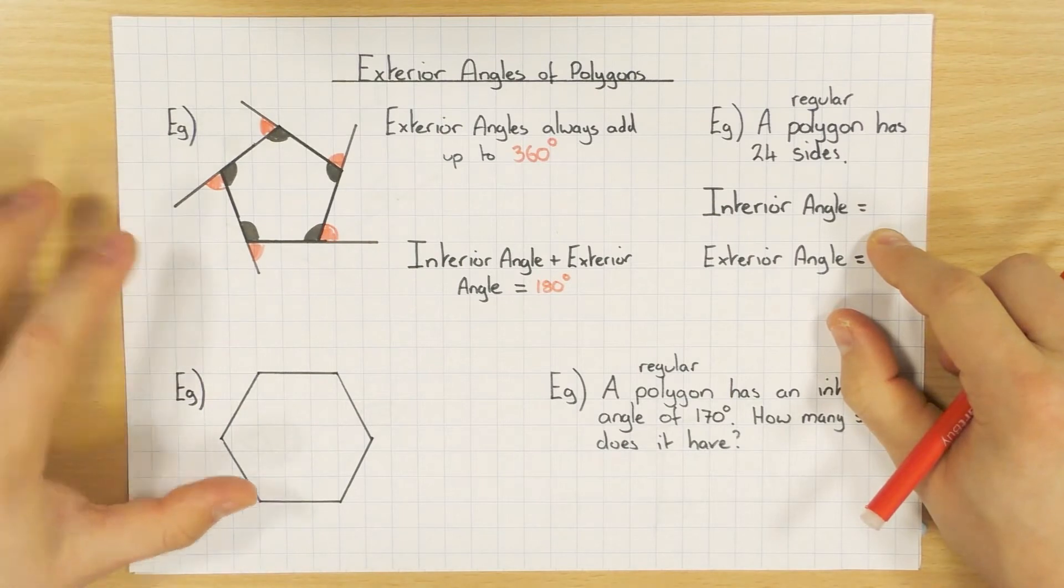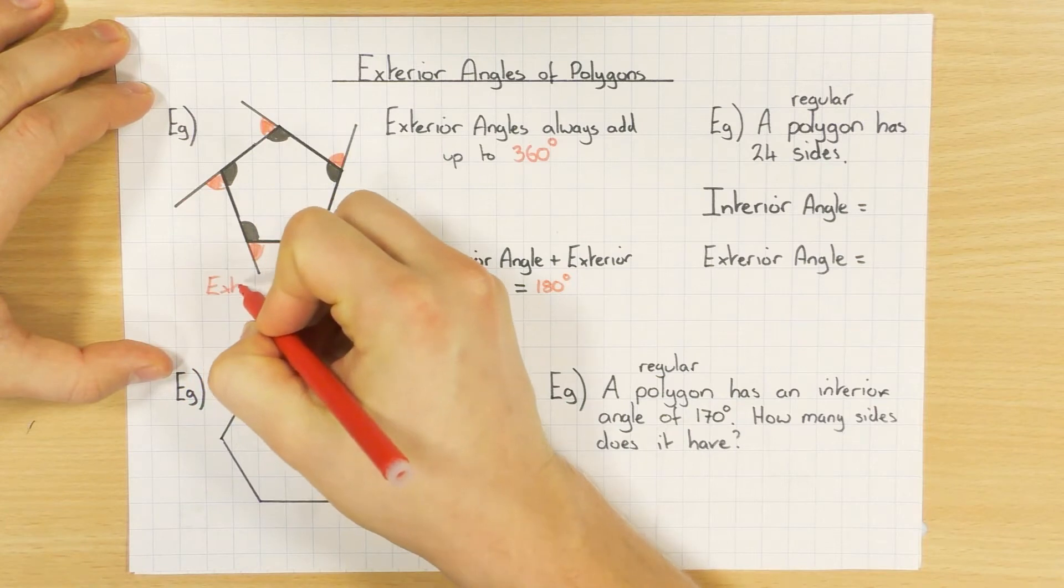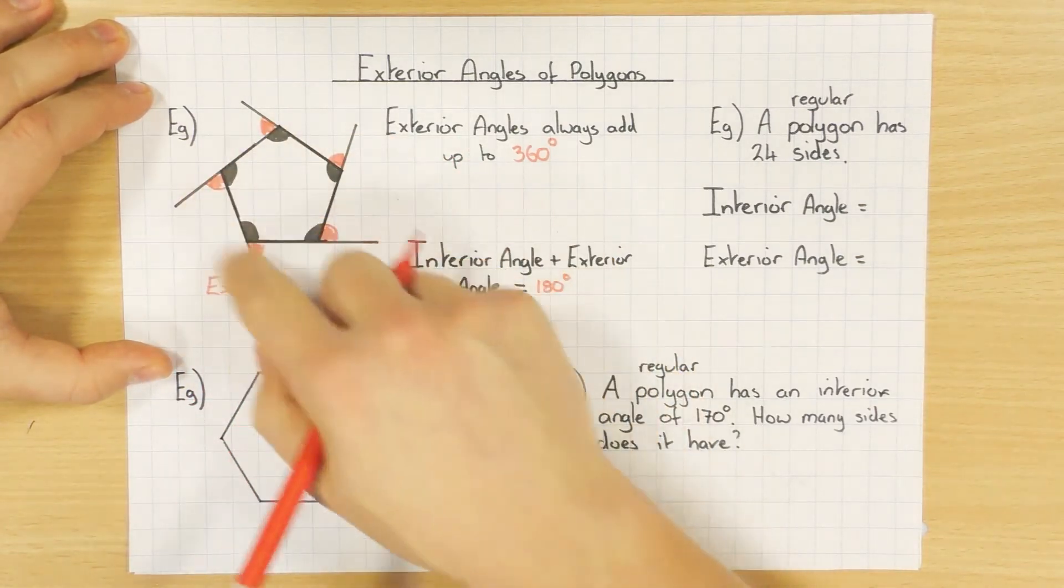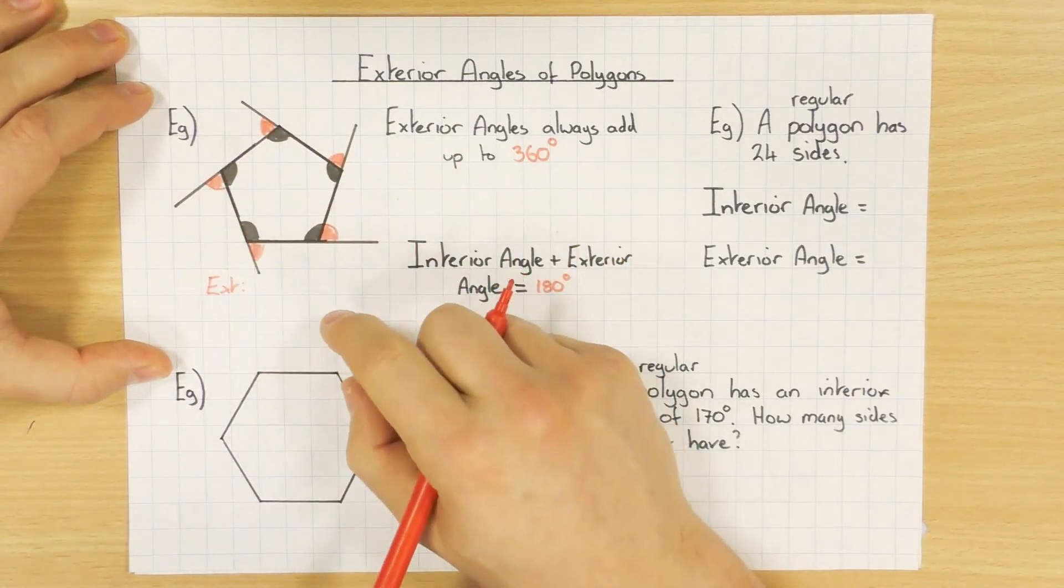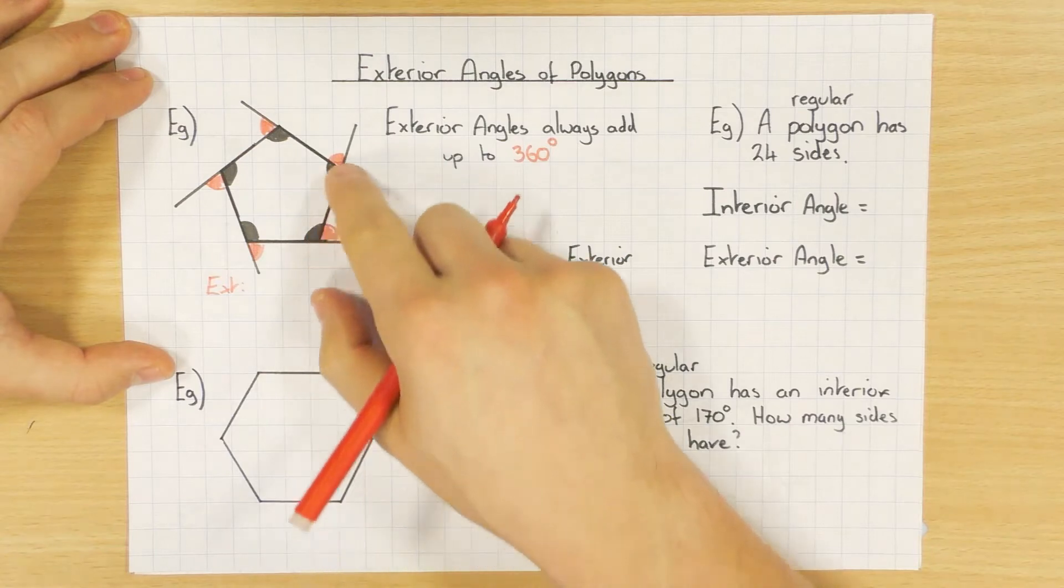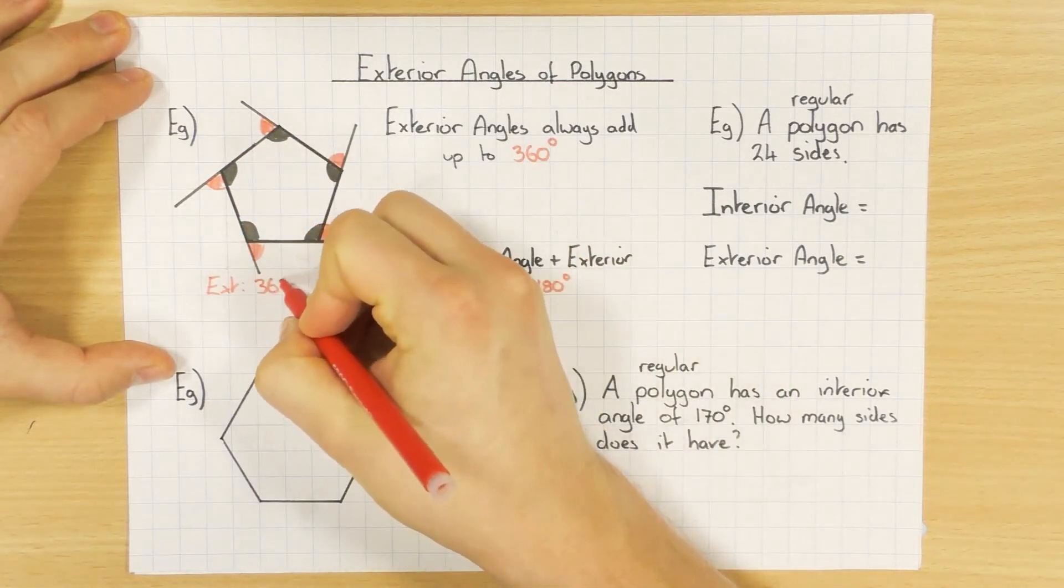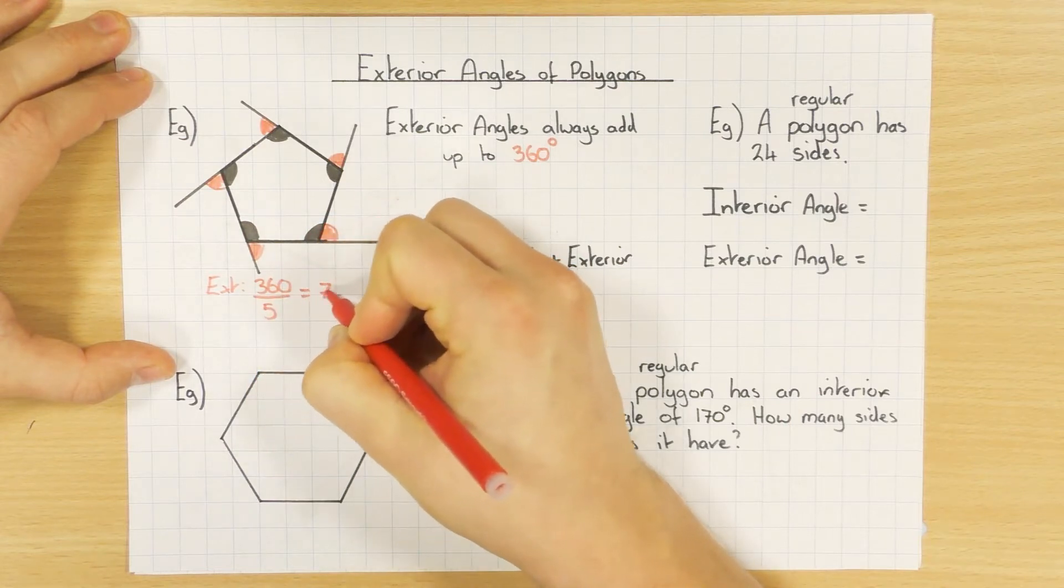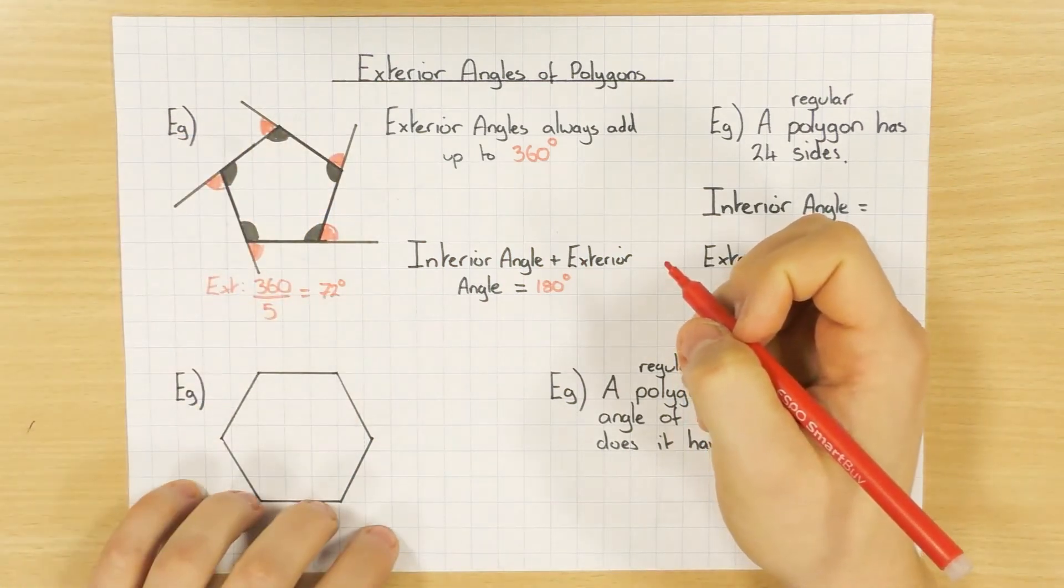Let's start working out what the exterior angle actually is. Because this is a regular polygon or pentagon because it's five sides, because it's regular, all the sides are the same. But more importantly, all the angles are the same. Because they're all the same and add up to 360, I can just do 360 divided by 5 and work out that the exterior angle would be 72 degrees.